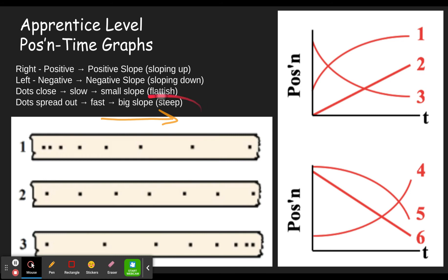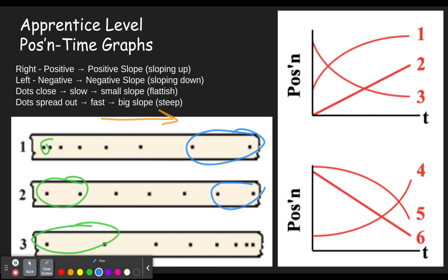Right now we'll do it for a rightward moving object, and later we'll do it for a leftward moving object. I'm going to use green to represent what happens at the beginning of the motion and blue to represent what happens at the end of the motion. We want to match up what's happening at the beginning of the motion with what's happening at time zero, and match the end of the motion with the end of the graph.